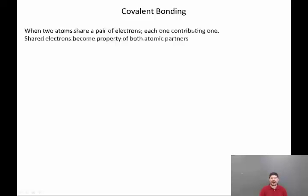Covalent bonding is when two atoms share a pair of electrons with each atom contributing one electron. What's important about this is that the shared electrons become the property of both atomic partners. A way I like to think about this is that if you get married, you will bring some stuff, your spouse will bring some stuff, and then when you make your household together, all of the stuff that previously belonged to each of you individually now belongs to both of you together.